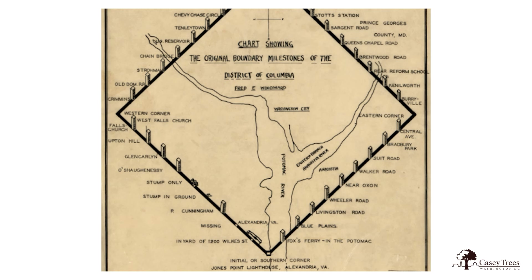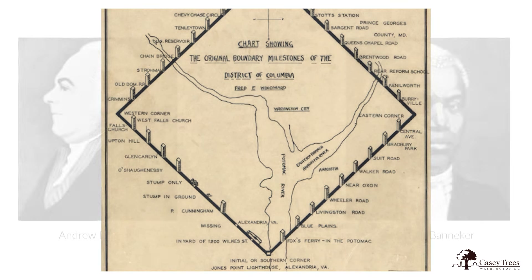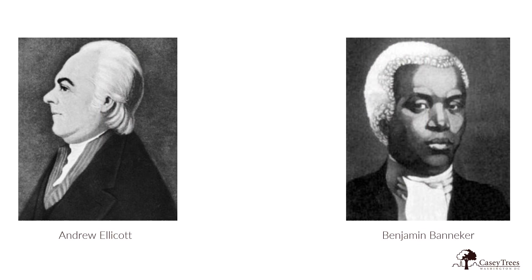But even the best laid plans often go awry, and during this process L'Enfant was relieved of his duties and left, taking all of his plans for DC with him. Luckily, Benjamin Banneker was able to recreate L'Enfant's plans from memory, and DC was finished without a hitch.